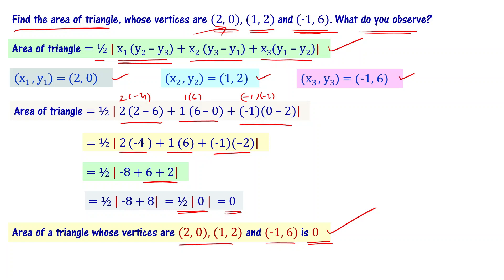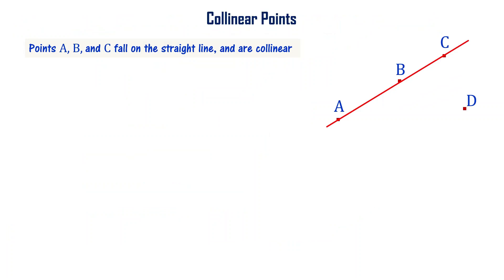Then, we are asked what do you observe? Let us quickly recall what does it mean by collinear points. Points A, B, C are falling on a straight line. If you look at the figure, A, B, C fall on a straight line. That's why they are called collinear points.